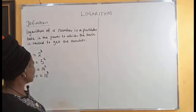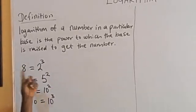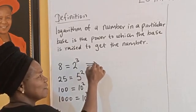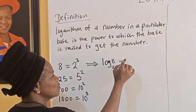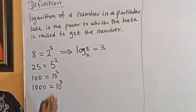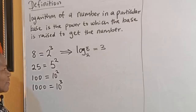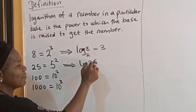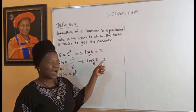For example, 8 is equal to 2 raised to the power 3. This implies you raise 2 to power 3 to get 8. So from the definition of logarithms, log of 8 in base 2 is equal to 3. Also, 25 is equal to 5 raised to power 2, which implies that log of 25 in base 5 is equal to 2, because you raise 5 to power 2 to get 25.